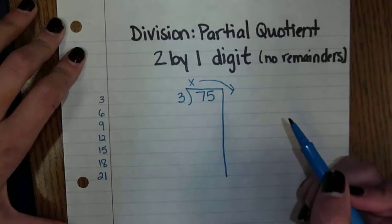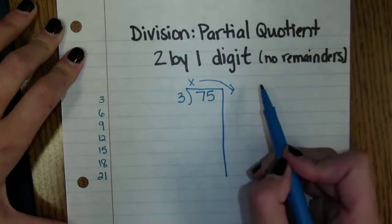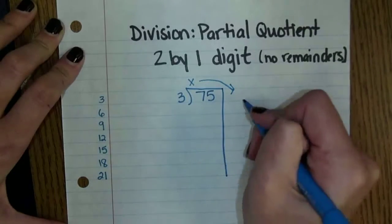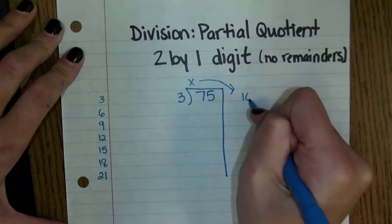So first off I'm going to just multiply 3 times 10. I'm going to do 3 times 10 because I know that is 30 and I know that's less than 75. So 3 times 10, my 10 is going to go over here.